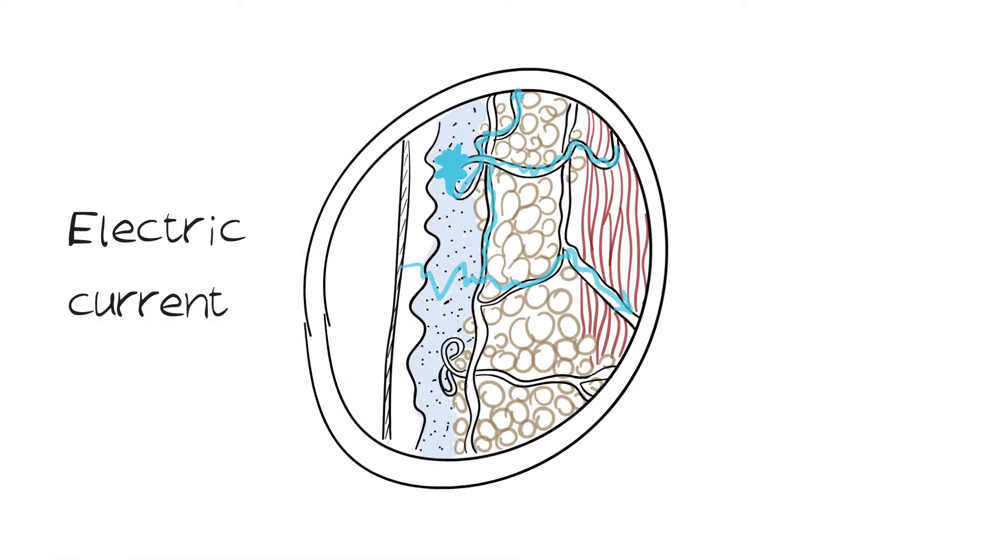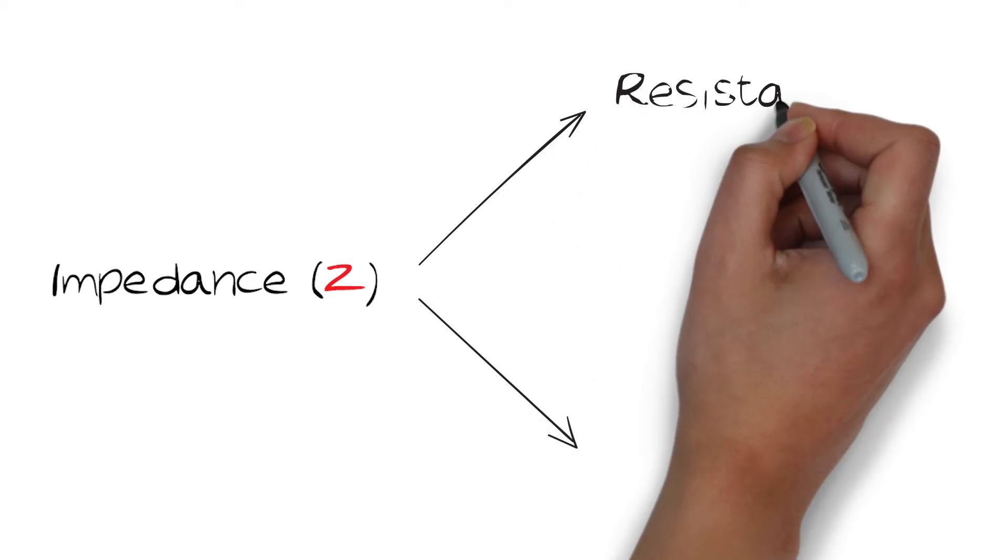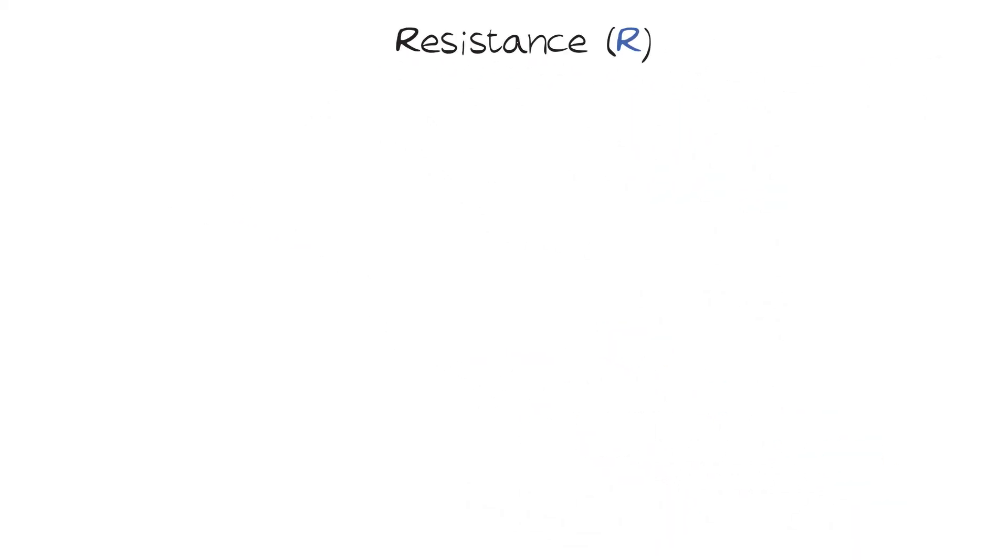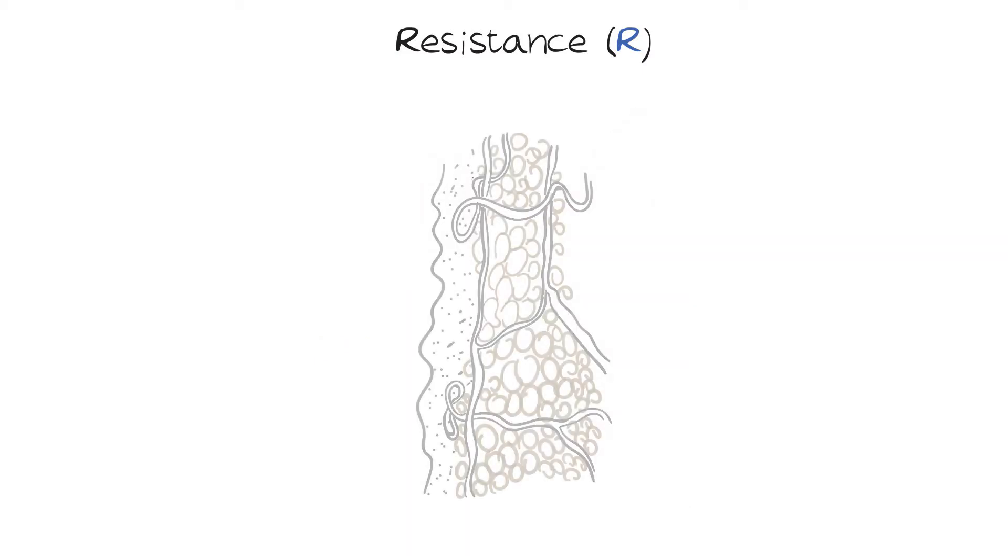Impedance is the measure of how current is slowed or stopped as it passes through a material. Impedance has two components: resistance and reactance.